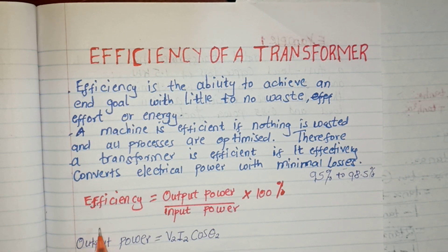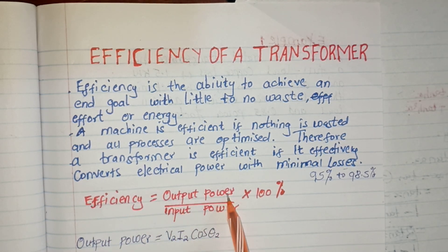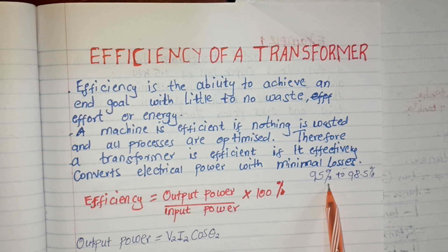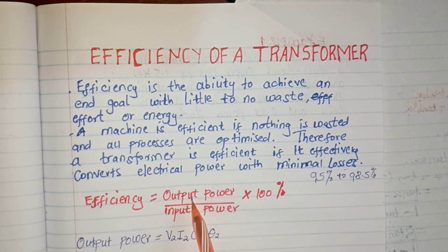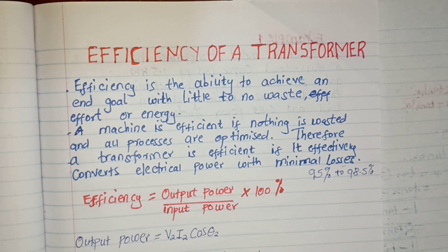How do we calculate the efficiency of a transformer? The efficiency is given by the output power divided by the input power, times 100 percent. That is how we express efficiency as a percentage — output power over input power times 100.